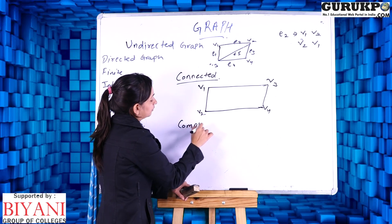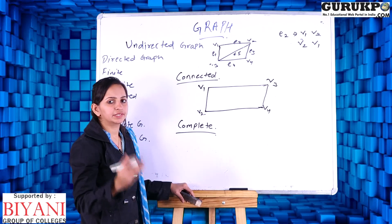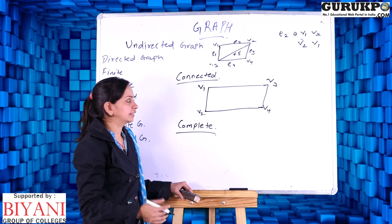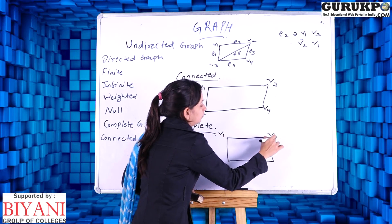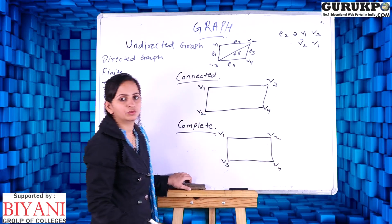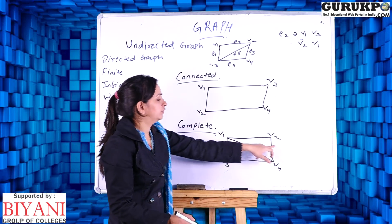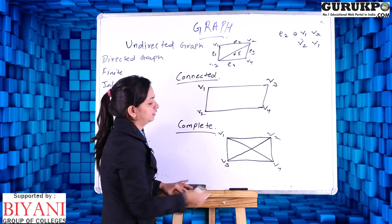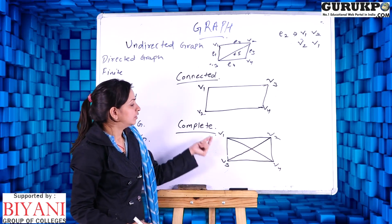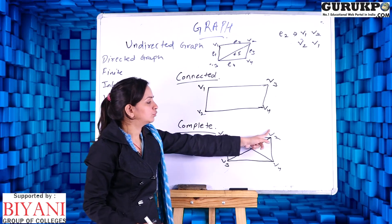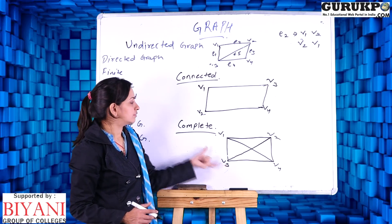Now coming to the next one — complete graph. What is a complete graph? In a complete graph every vertex is connected to each other vertex. If I draw a complete graph of four vertices V1, V2, V3, V4, then V1 must be connected to V2, V3, and V4; V2 is connected to V1, V4, and V3; V4 is connected to V2, V3, and V1. This is a complete graph of four vertices because every vertex is connected to each other vertex.